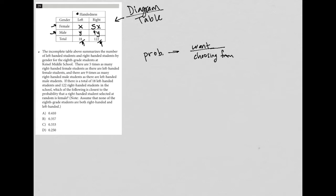So let's figure out what they're asking us to find. Which of the following is closest to the probability that a right handed student, so we're choosing from all the right handed students, that a right handed student selected at random is female? So what I want out of the right handed students is a female right hand student.